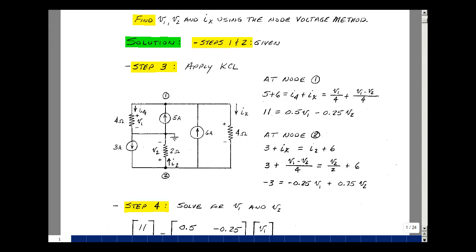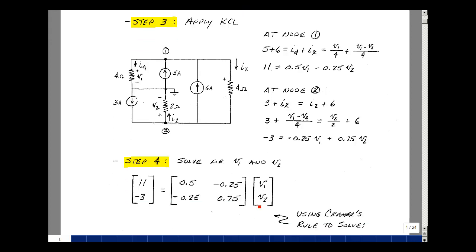Step 4 is to solve for the node voltages, that in matrix form. So we have that 11 is equal to a half V1 minus a quarter V2. Then we have minus 3 is equal to minus a quarter V1 plus 3 quarters times V2.